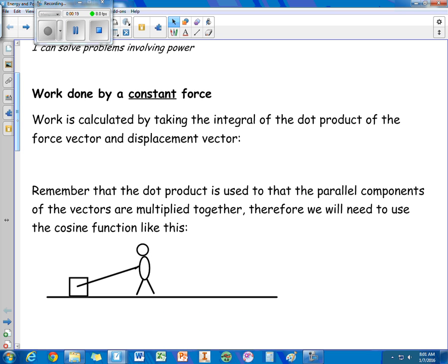When it comes to work, we're going to consider two types of forces: constant forces and non-constant forces. A constant force is a force that stays the same no matter what. A non-constant force would be a changing force. An example of that would be like a spring. The farther you pull on a spring, the stronger that elastic force becomes. That would be a changing force. But for the time being, we're going to focus on constant forces, so a non-changing force.